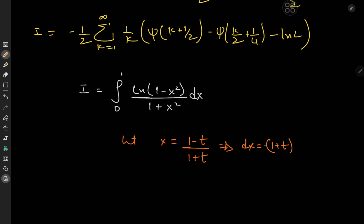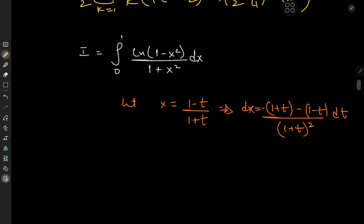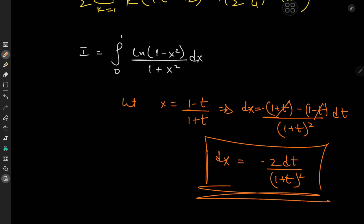Let's differentiate to get the transformation for the differential element. We have dx equal to [(1 plus t)(negative 1) minus (1 minus t)(1)] divided by (1 plus t) squared dt. We have some cancellations here — the t terms go away — and we're left with negative 2 dt over (1 plus t) squared. That's how dx works out in the t realm.